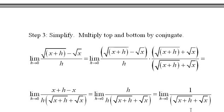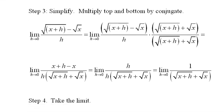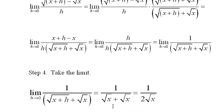Now it may be that we can take the limit as h heads to 0. And when we do, what we end up with is 1 over the square root of x plus the square root of x, which is 1 over 2 times the square root of x. And that's the derivative of the square root of x.